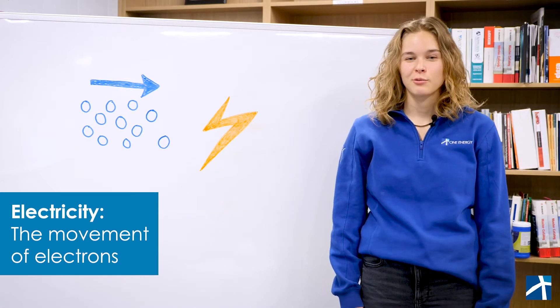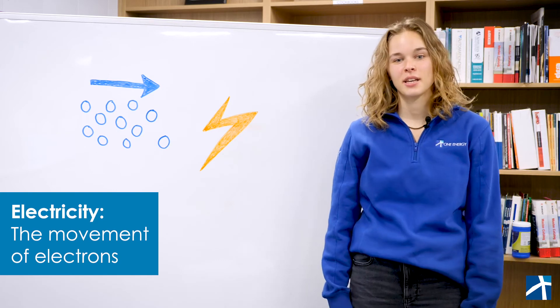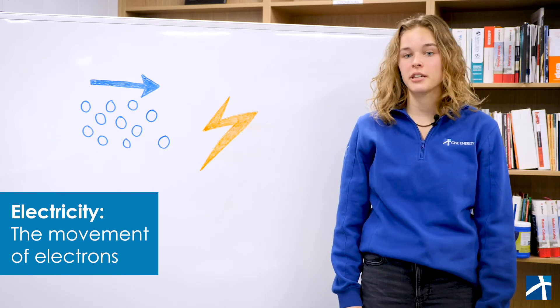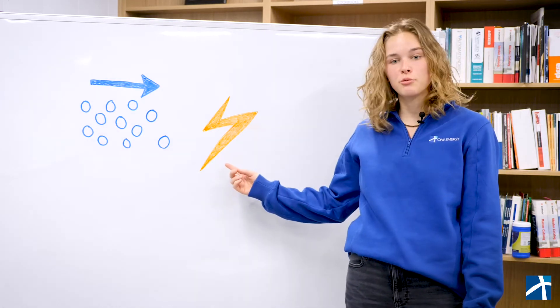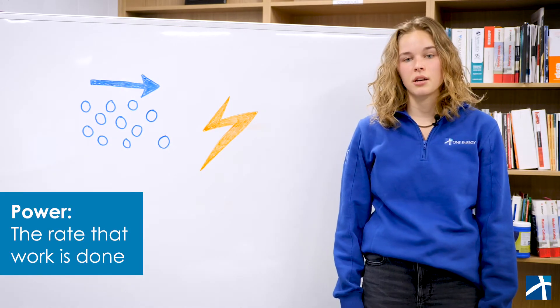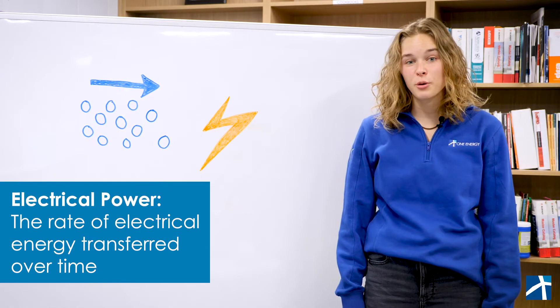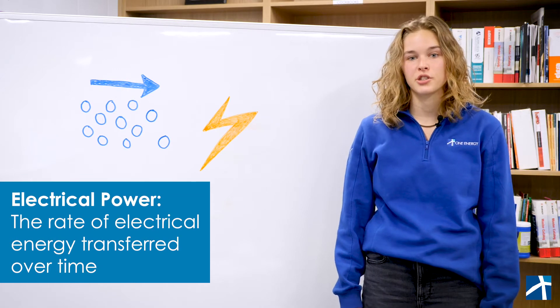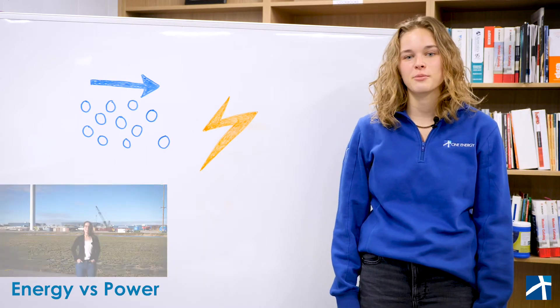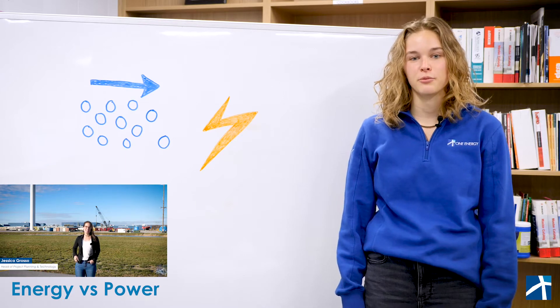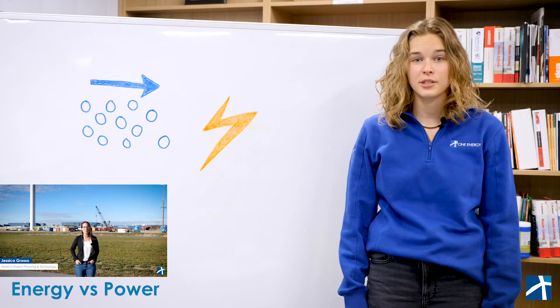Current? Direction of flow? What does that mean? Let's pause and talk a little more about some electricity fundamentals: power, current, and voltage. Electricity is the movement of electrons, which are tiny particles that we can't see. When electrons move, they create charge, which we can capture to do work. Remember that the rate that work is done is called power, so electrical power is the rate of electrical energy transferred over time.